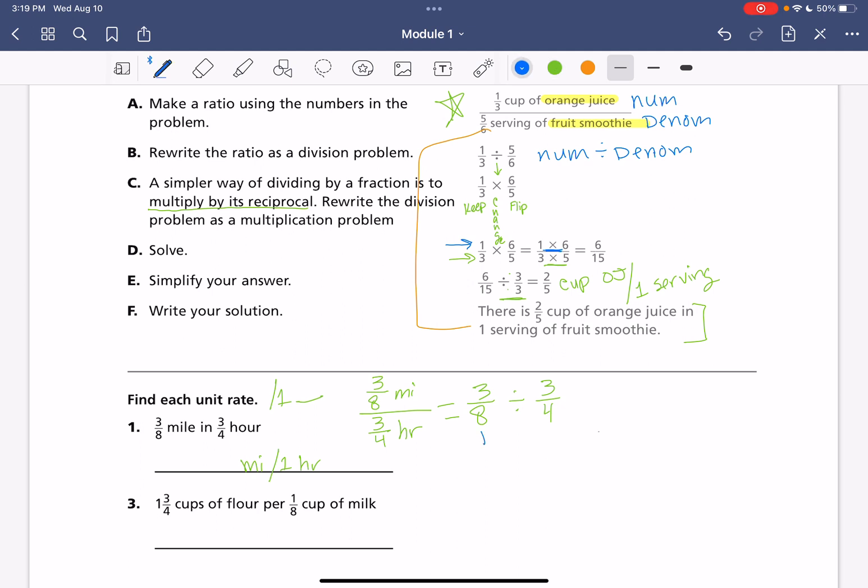We're going to do our keep, change, and flip. So we'll have 3 eighths times. And then we're going to do our reciprocal of just our second number. So 3 fourths, we flip that to be 4 thirds. And then we go to step D here, our solving. We're going to go across our numerator and across our denominator. We're going to have 3 times 4 is 12. And then 8 times 3 is 24.